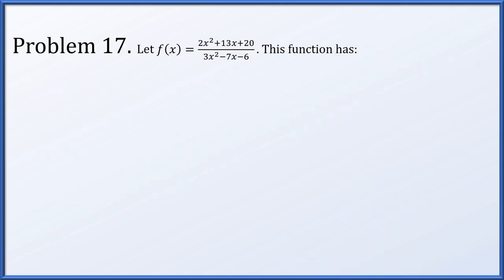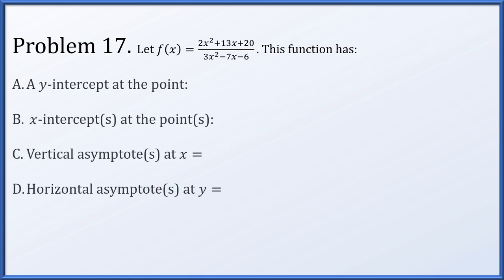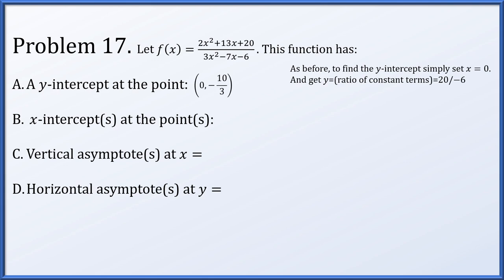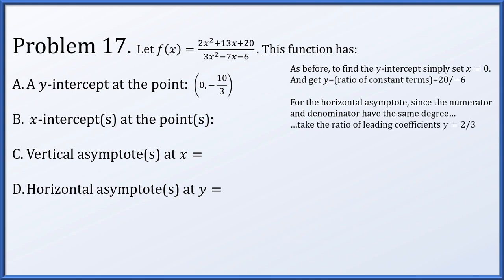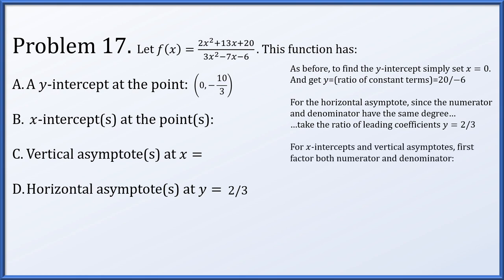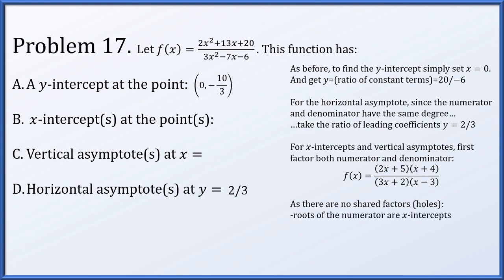In problem 17, f(x) equals (2x squared plus 13x plus 20)/(3x squared minus 7x minus 6). The y-intercept: let x equal zero to get 20 over negative 6, which simplifies to negative 10/3, giving (0, negative 10/3). The horizontal asymptote is the ratio of leading coefficients: y equals 2/3. Factoring gives (2x plus 5)(x plus 4) over (3x plus 2)(x minus 3). No shared roots means no holes. The x-intercepts are at x equals minus 5/2 and x equals minus 4, and the vertical asymptotes are at x equals minus 2/3 and x equals 3.